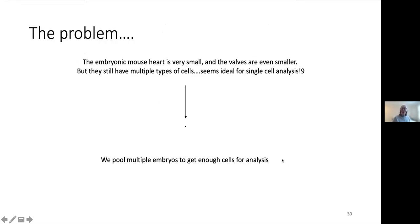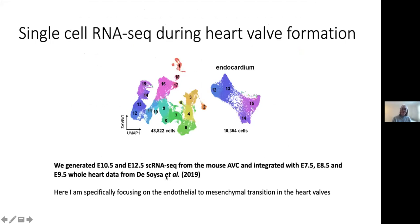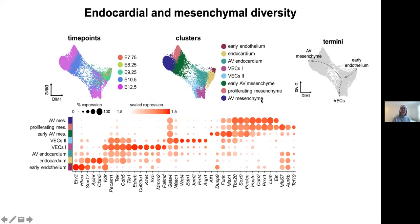The embryonic mouse heart is very small and the valves are even smaller, but they still have these multiple cell types, making this an ideal system for single cell analysis. We dissected out that pinched region — that atrioventricular canal region — at E10.5 and E12.5, and did single-cell RNA-seq on that. We integrated that with some E7.5, E8.5, and E9.5 whole heart mouse data. For this talk, I'm going to specifically focus on the endothelial to mesenchymal transformation in the heart valves. We extracted the cells involved in that process — those endocardial to mesenchymal lineages.